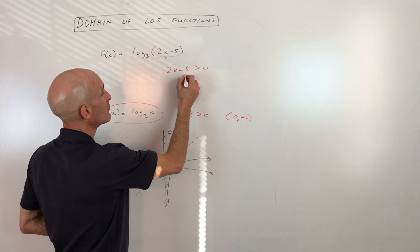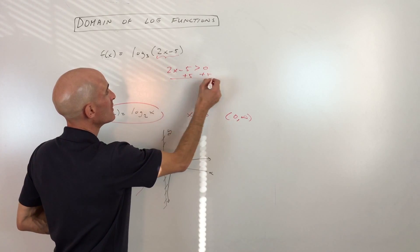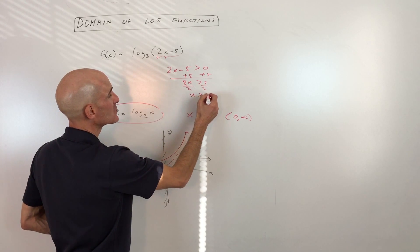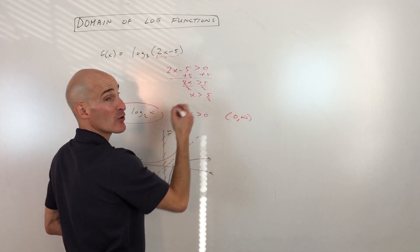So here you can see if we add five to both sides, we get two x is greater than five, divide both sides by two, and you can see that x is greater than five halves. So that would be your domain.